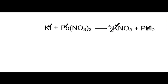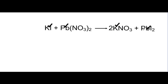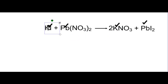So we've got two potassium on this side. If we put two potassium on this side it means we've got two potassium and two nitrate on the right hand side as well, and two nitrate on the left hand side. Then looking at the iodine, we've got two iodine on the right and one iodine on the left, and two potassium on the right but one on the left. So we put a two in front of the potassium iodide.